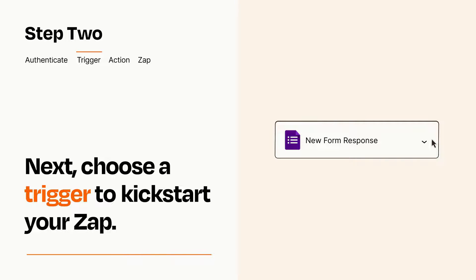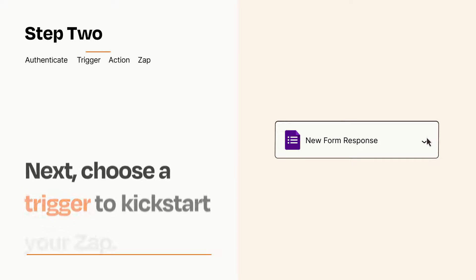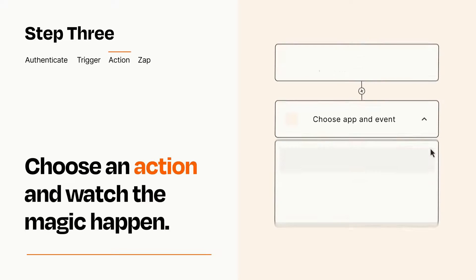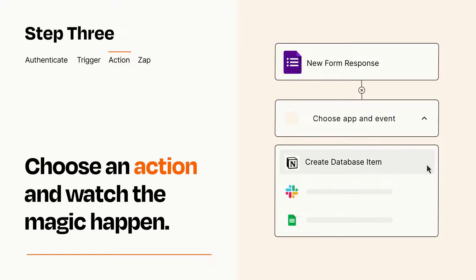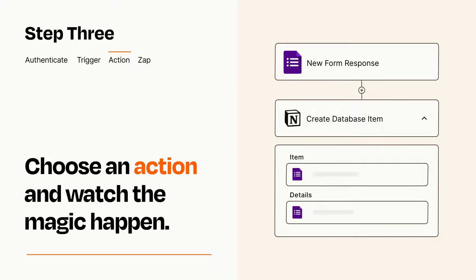This last part is where the magic happens. Choose the action you want to happen in your target app. You'll see a bunch of fields where you can specify the details of your Zap. You can type free form text or pull data in from your trigger step as needed.